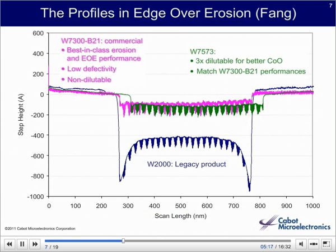See the surface profile in blue for polishing tungsten arrays with W2000, a legacy CMC product. Most of the array has eroded about 500 angstroms, but at either end it is nearly 1,000. Our scientists have developed a new system, W7300 and W7500, shown in pink and green, that reduced total erosion to less than 200 angstroms and with no fang.